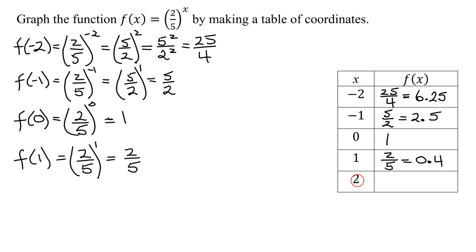Finally, we figure out f of two. It is two-fifths raised to the x, well, x is two in this case, so it's two-fifths all squared, which is just two squared over five squared. Two squared, two times two is four, over five squared, five times five is 25. So f of two is four-twenty-fifths, and in decimal form, that is 0.16.